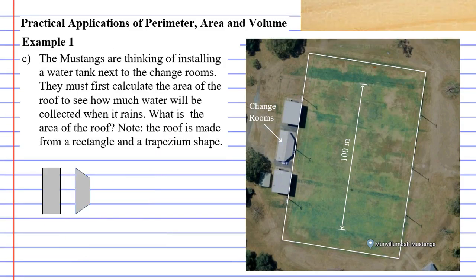We'll now move on to question C. The Mustangs are thinking of installing a water tank next to the change rooms. They must first calculate the area of the roof to see how much water will be collected when it rains. What is the area of the roof? The roof is made from a rectangle and a trapezium shape. I've drawn the rectangle and trapezium separate to help with writing down our measurements.